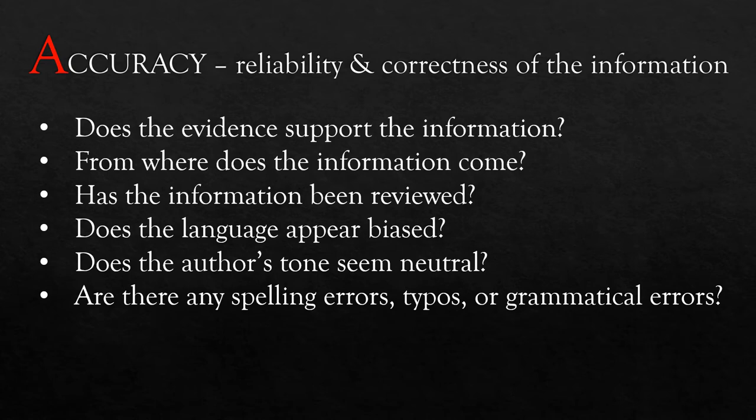The second A is for Accuracy. Accuracy refers to your source's reliability. Is the information peer reviewed? Where's it coming from? Is it supported? What about spelling errors, typos, grammar? Obviously, a source filled with grammar problems is probably not something you'll want to use in your research.